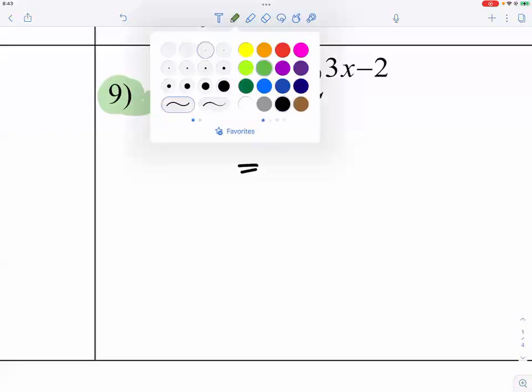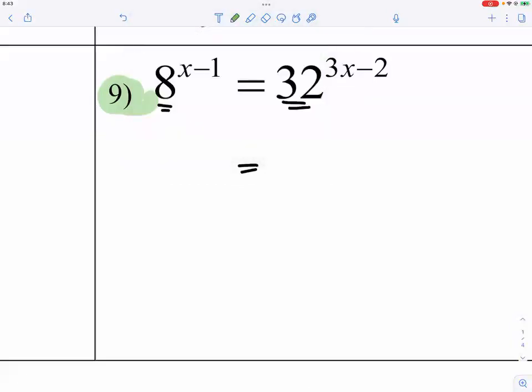Let me go ahead and change the color. Are you gonna rewrite the 8? You're gonna rewrite the 32? It's all about your efficiency on rewriting these numbers. We say 8 is 2^3 and 32 is 2^5. So you have (2^3)^(x-1) = (2^5)^(3x-2).